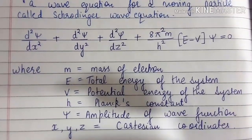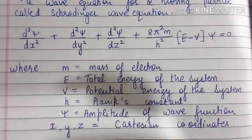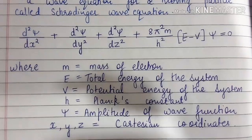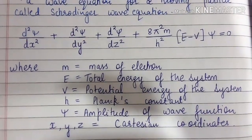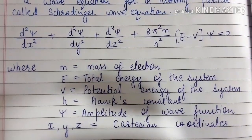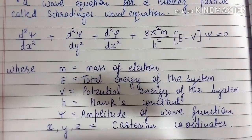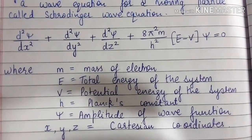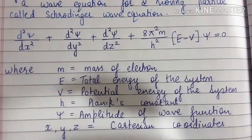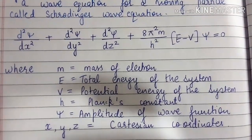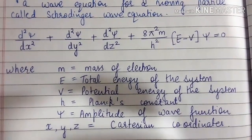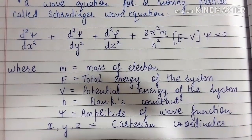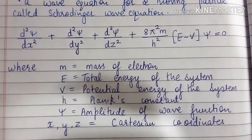This is our Schrödinger wave equation, which we will derive. Here M is the mass of the electron, E is the total energy of the system, V is the potential energy of the system, H is Planck's constant, psi is the amplitude of the wave function, and X, Y, Z are the coordinates.